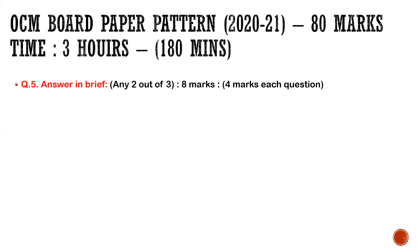Question number five is 'Answer in brief' — any two out of three, eight marks, meaning one question is four marks. For four-mark questions, keep in mind five to six points. If you have more points, you can narrow down to four points as needed.